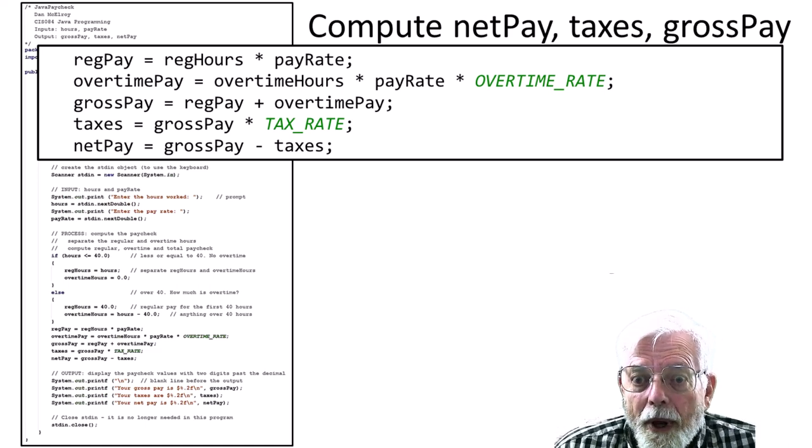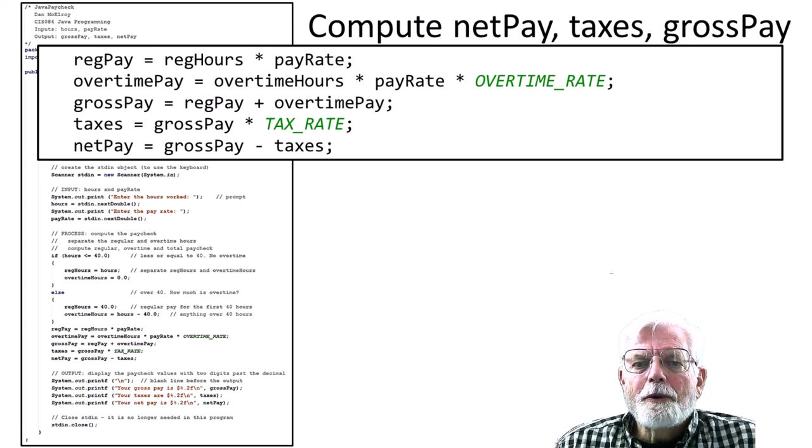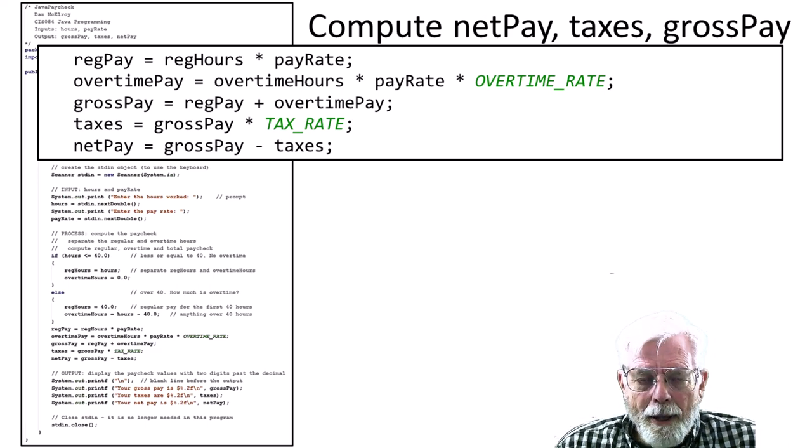The gross pay, pay before taxes or any other deductions, is the sum of reg pay and overtime pay. Taxes are based on the tax rate defined at the top of the program. Net pay is anything left over from the gross pay after the taxes have been deducted.